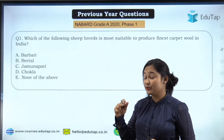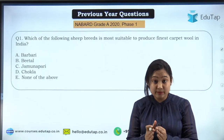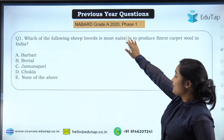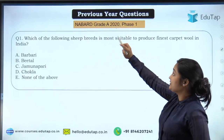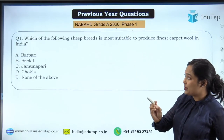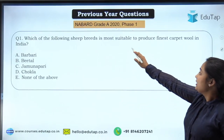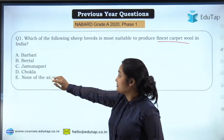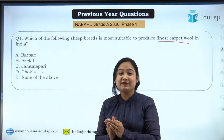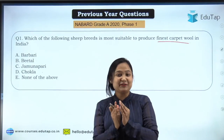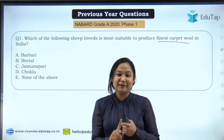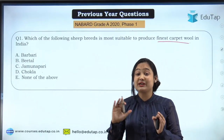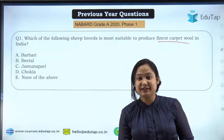Today we are talking about the remaining breeds. We have already discussed cow and buffalo. Today we will look at goat and sheep — what are the important breeds, what kind of questions can appear, and at the end we will discuss some practice questions. There was a PYQ from 2020 Phase 1: 'Which of the following sheep breeds is most suitable to produce the finest carpet wool in India?' Options were Barbari, Bital, Jamnapari, Chokla, or none of the above. We will answer this after studying the breeds.